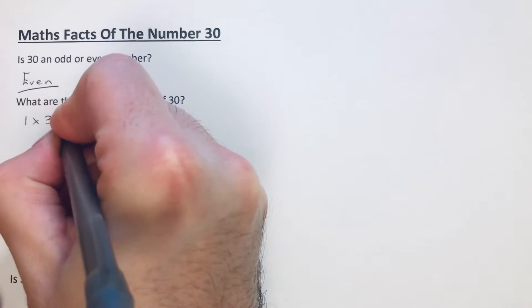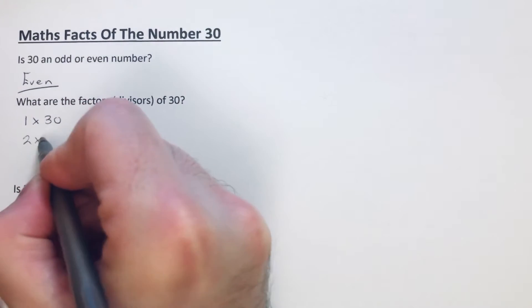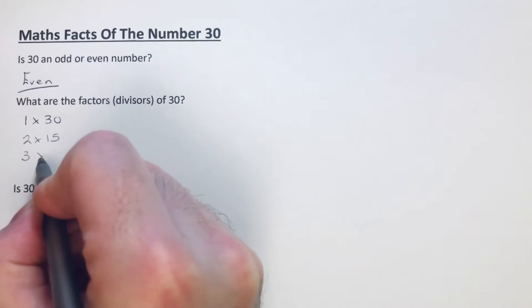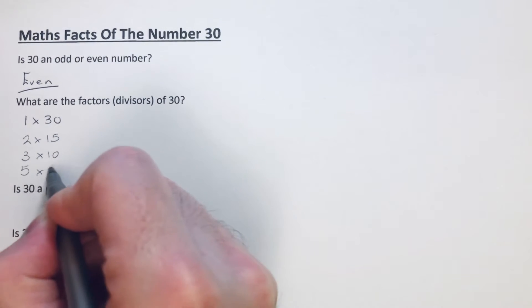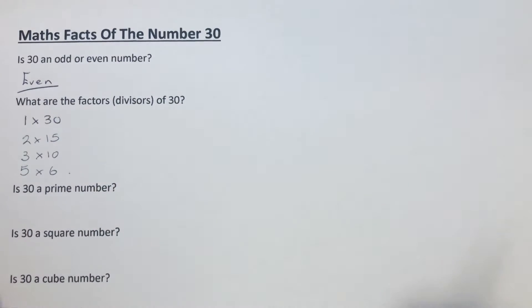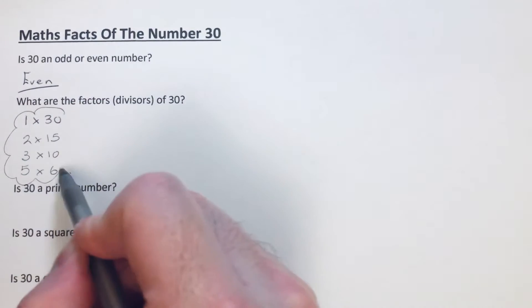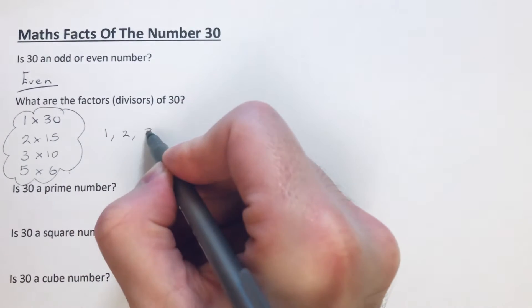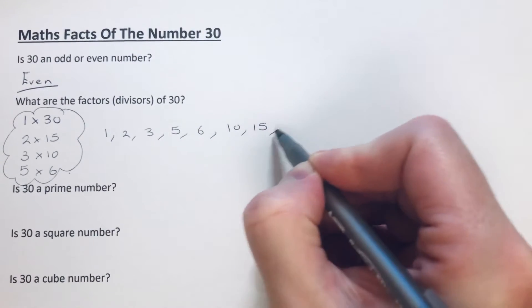Then we've got 2, which goes into 30 15 times. Then 3 goes into 30 10 times. 4 doesn't go into 30. Then we've got 5, which goes 6 times, and then we're back to 6. So these are all our factors of 30: 1, 2, 3, 5, 6, 10, 15, and 30. We've got 8 factors altogether.